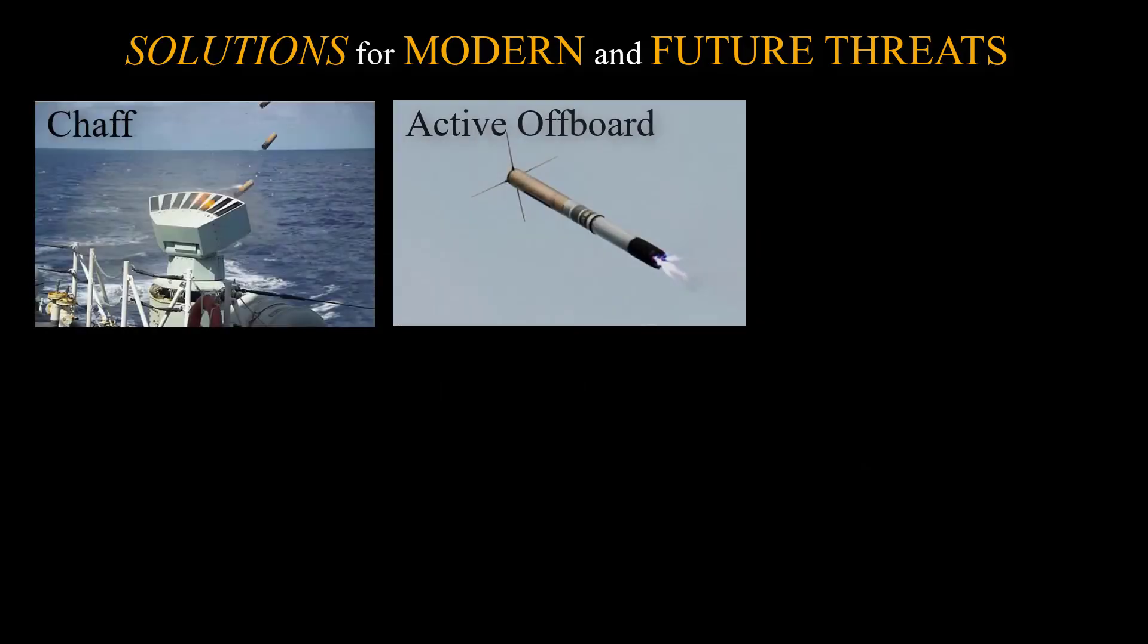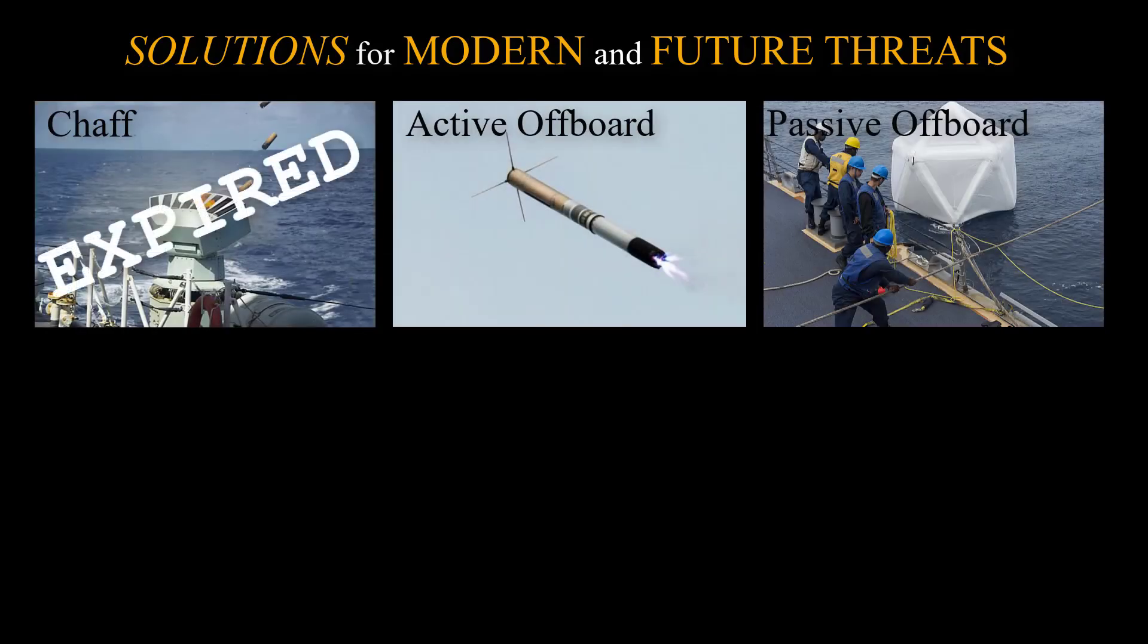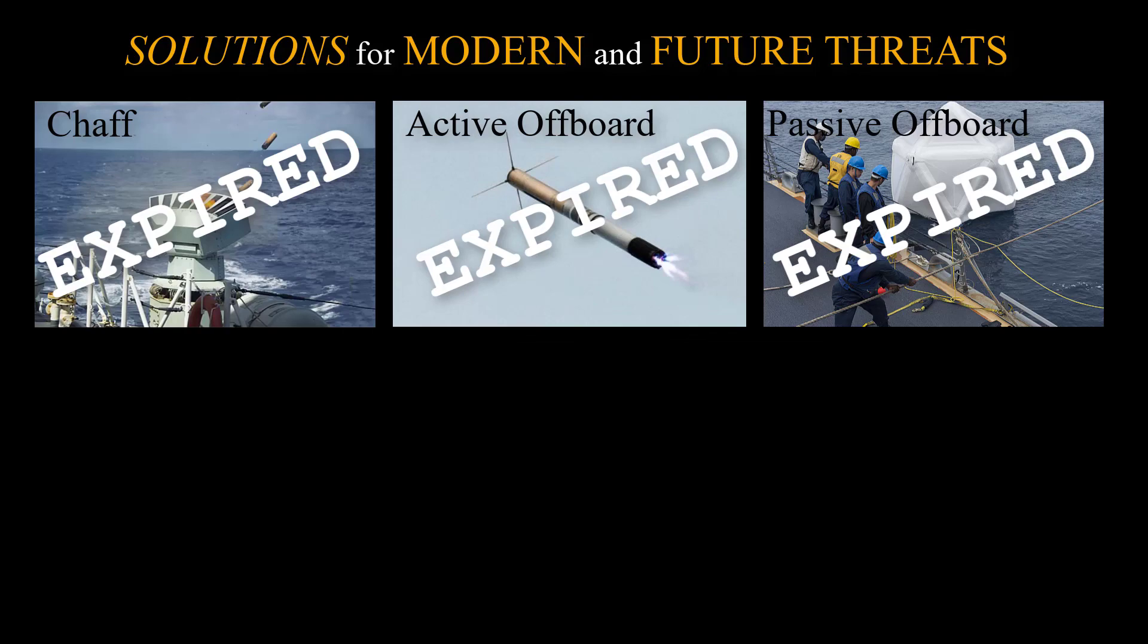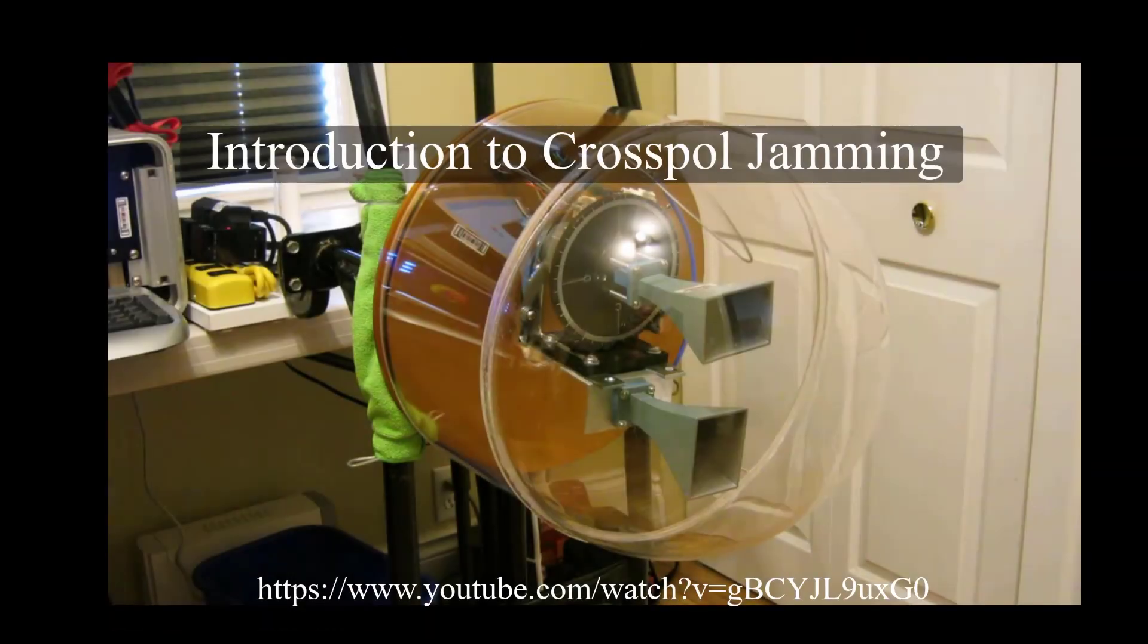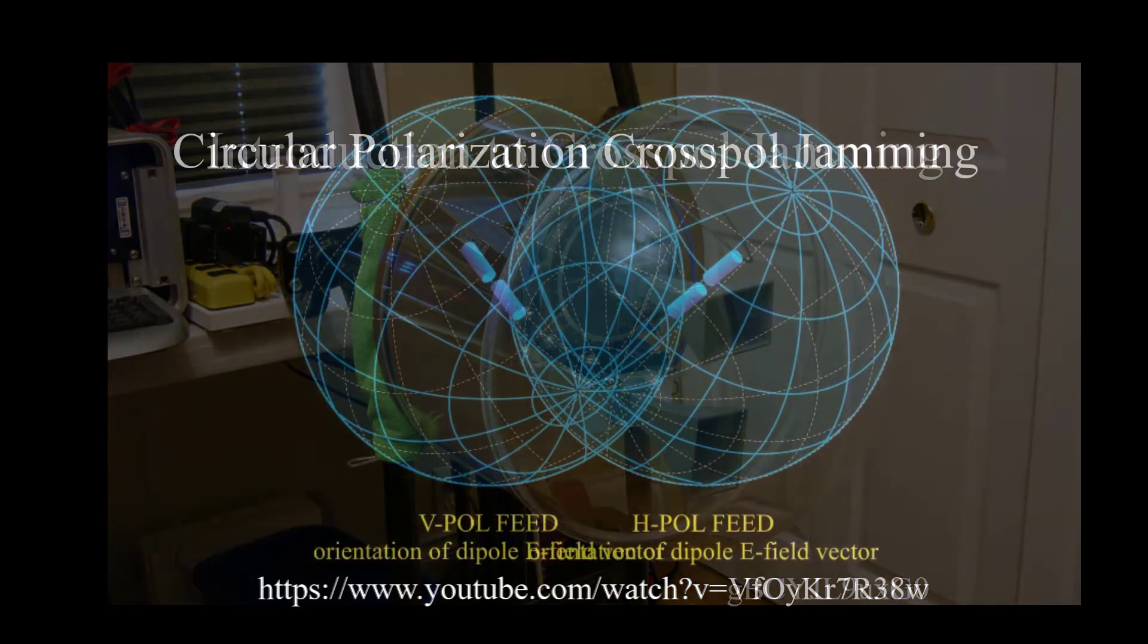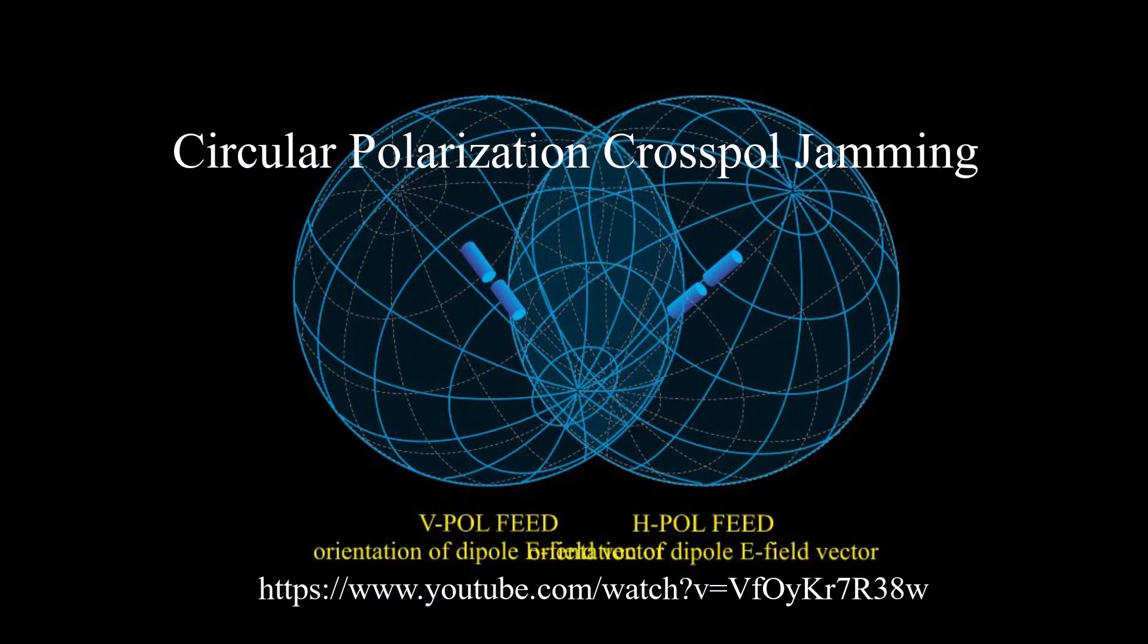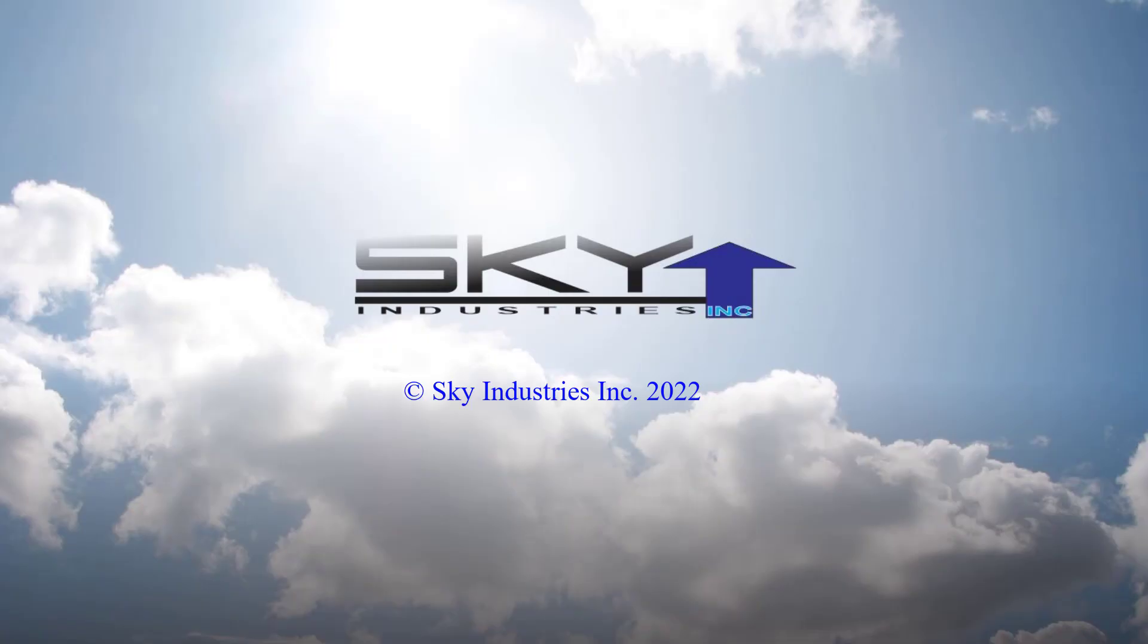So, if time's up for off-board decoys and chaff, as far as modern and future missiles are concerned, what about using cross-pole to peel the seeker off the ship? To find out about that, here are a couple of videos. And this concludes a perspective on the possible effectiveness of decoys against modern and future radar-guided missiles.